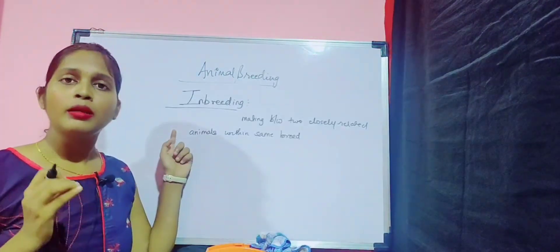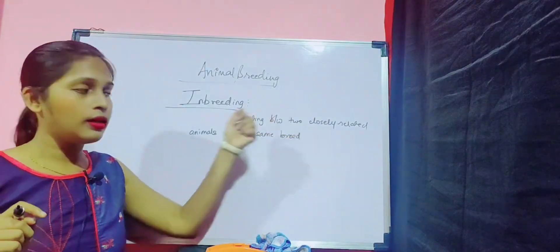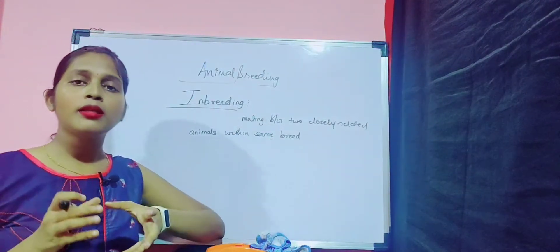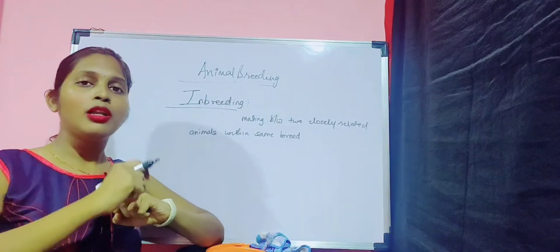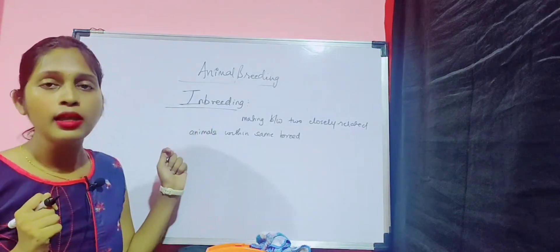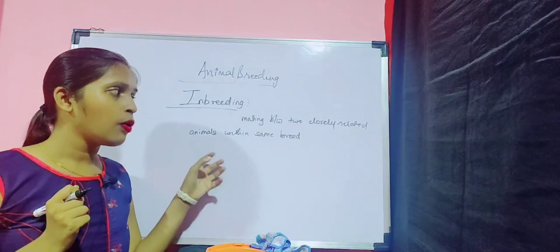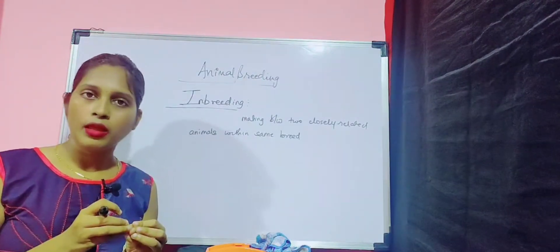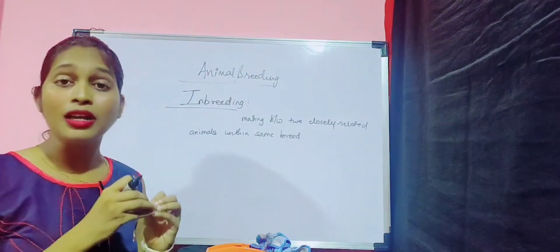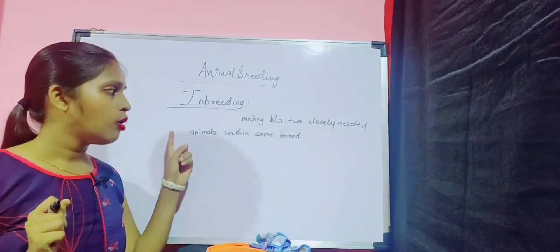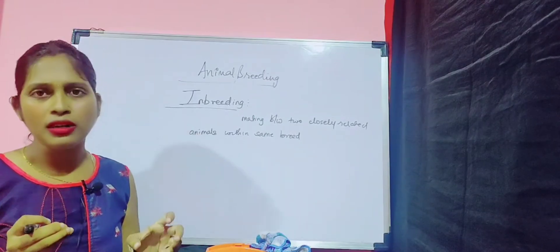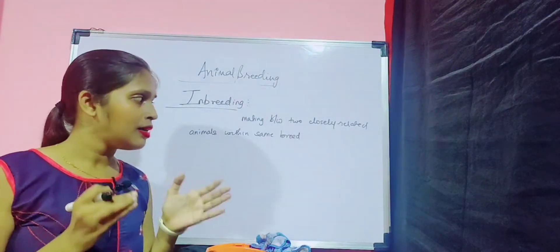Inbreeding means mating between two closely related animals within the same breed, sharing a common ancestor. We opt for inbreeding when we have an animal with a desired quality that we want to preserve. So whenever we want a character of our own choice, we will opt for inbreeding.